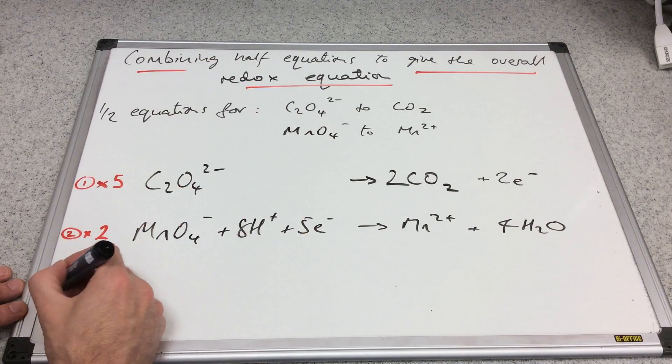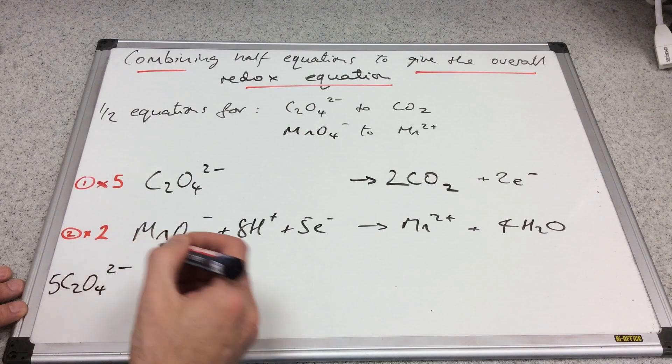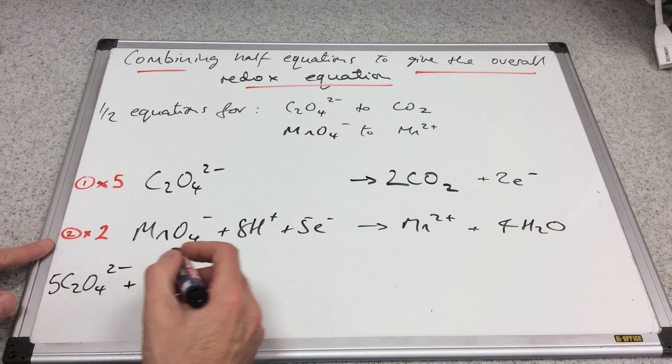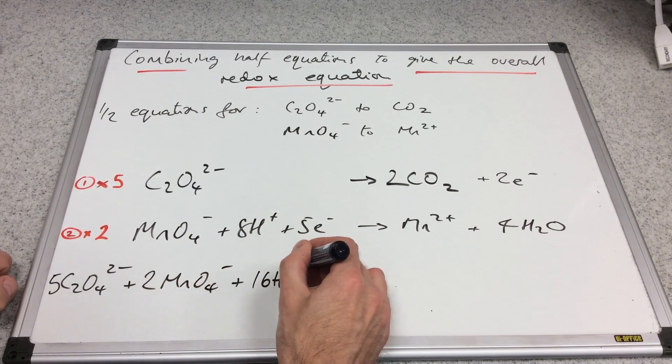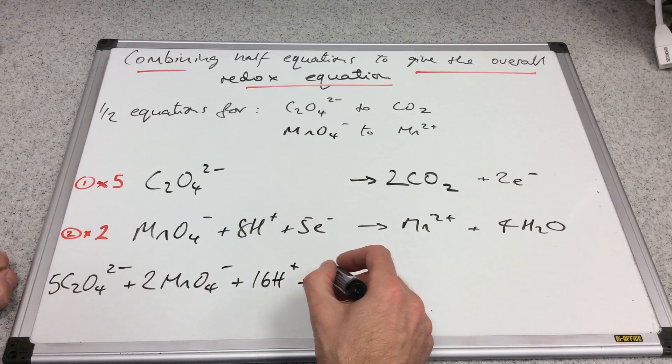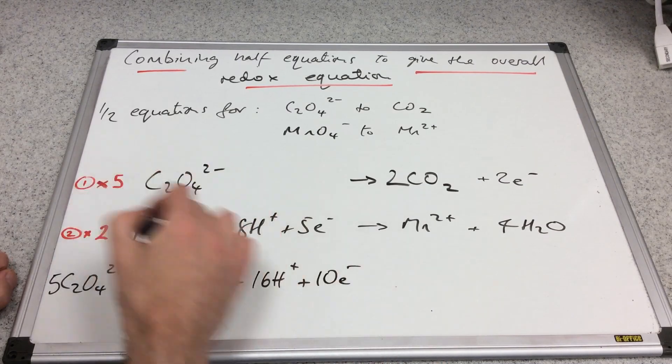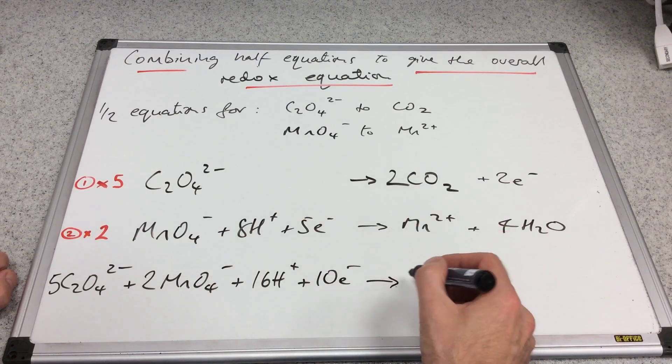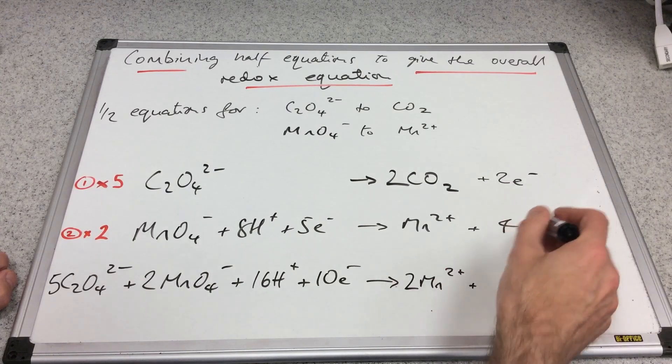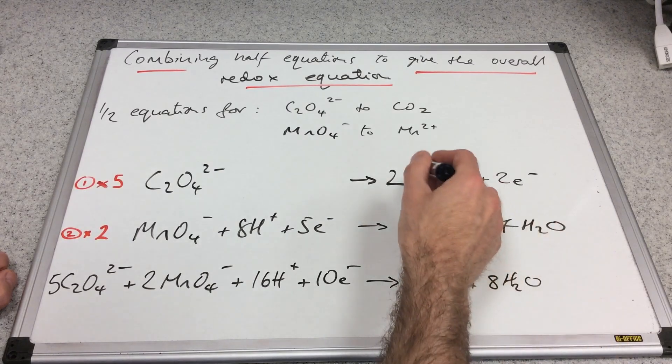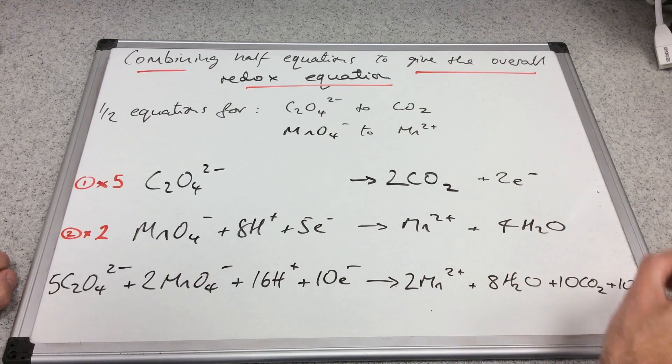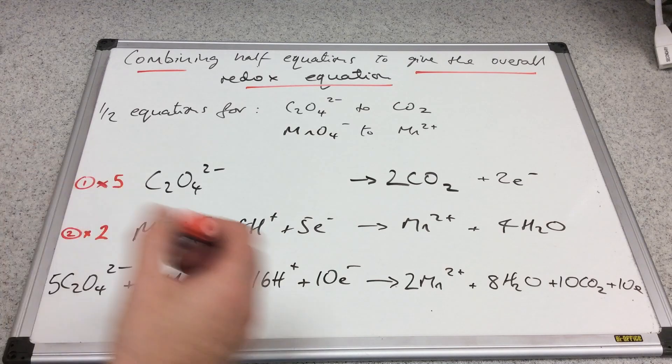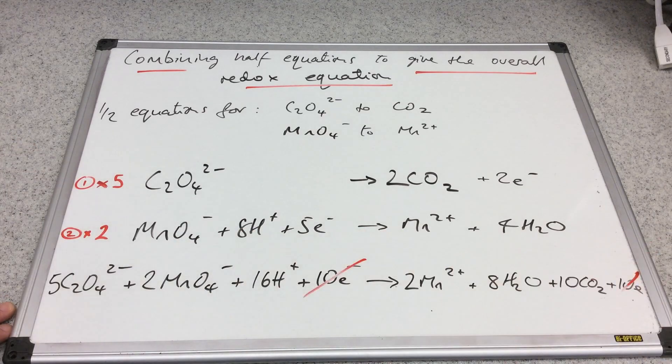We've got 5C2O4²⁻ + 2MnO4⁻ + 16H+. I'll put the electrons in just so you can see that they will cancel - 10 electrons. That's everything on the left. On the right, we've got 2Mn²⁺ plus eight waters. We've got 10CO2s, and again we've got 10 electrons. You can see that the electrons are definitely going to cancel. What's left is the redox equation.